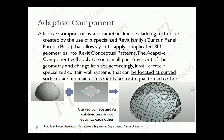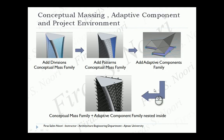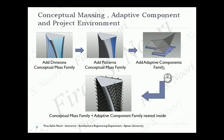In the conceptual massing environment, that's a powerful tool. We can then send this to the project environment, add levels, slice each part of that, and have Revit give us automated plans and sections. That's the concept — you add a division, then add a pattern inside it, and then you load the adaptive component family and apply it.